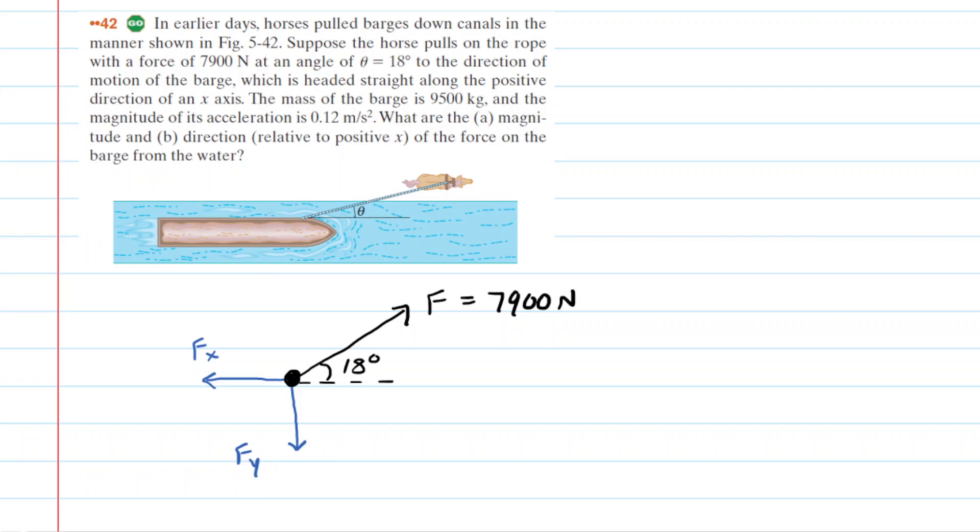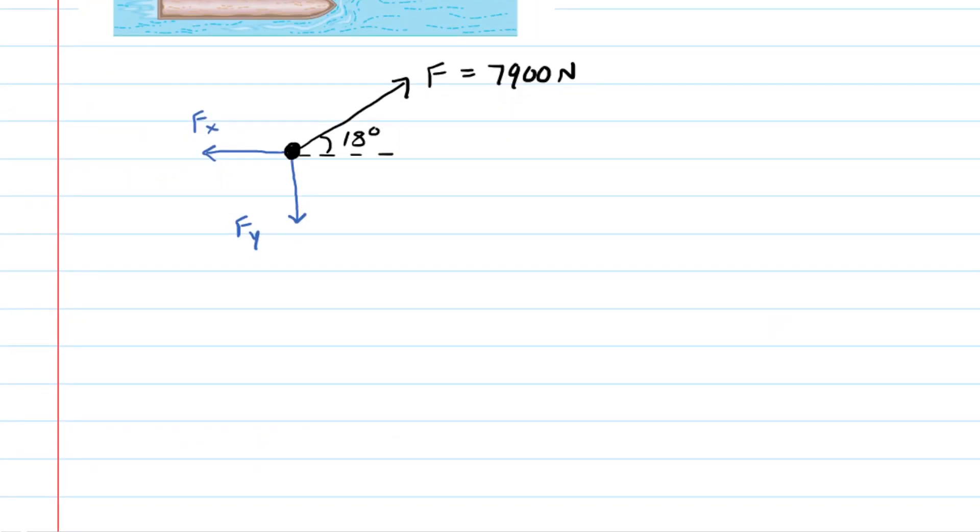Once we have drawn the free body diagram showing forces acting on the barge, we're going to want to apply Newton's second law. We will start with the sum of the forces acting in the X direction and set that equal to the mass times the acceleration in the X direction. We have to be a little careful because we only want forces acting in the X direction, so it might be useful to actually draw and find the X component, as well as the Y component, which we will use later.